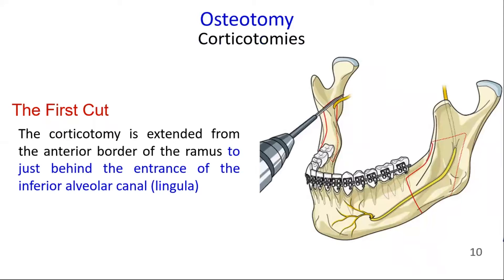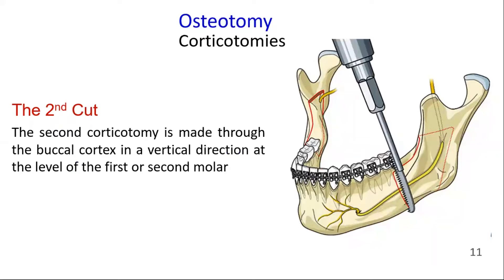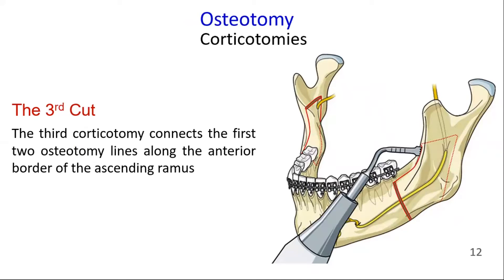The procedure starts with three corticotomies. The first cut is made through the lingual cortex just above the mandibular foramen, parallel to the occlusion. The corticotomy is extended from the inferior border of the ramus to just behind the entrance of the inferior alveolar canal or lingula. The second corticotomy is made through the buccal cortex in a vertical direction at the level of the first or second molar. The third corticotomy is along the inferior border of the center of the ascending ramus and connects the first two lines.